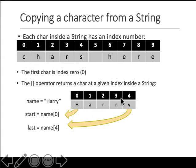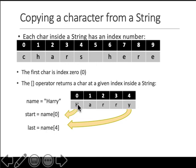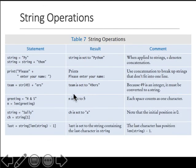If you want a single character out of a string, you can access it by giving the name of the string with square brackets and the index of the character. So name[0] is H, meaning start equals H. name[4] is y, so last equals y. Start equals uppercase H. Similar to math operations, there are many string operations, and this slide shows the statement, the result, and a comment explaining how it works.